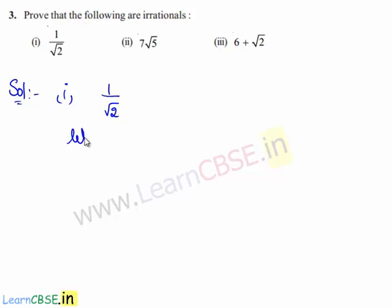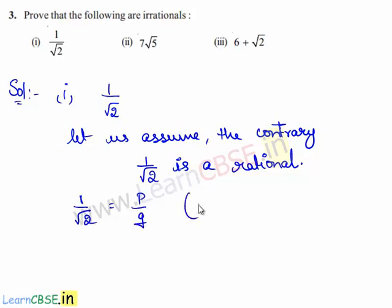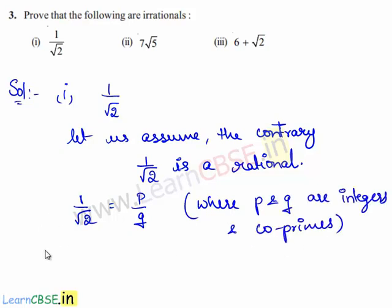For this, let us assume the contrary — that is, 1 by root 2 is a rational. Since we have assumed that 1 by root 2 is a rational number, 1 by root 2 can be written in the form of p upon q, where p and q are integers and also co-primes. This implies root 2 is equal to q upon p.